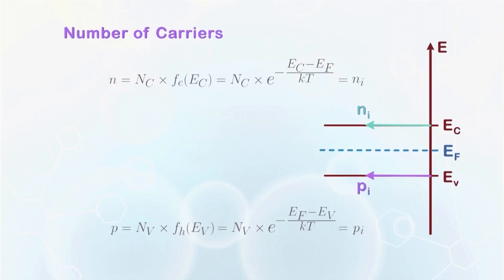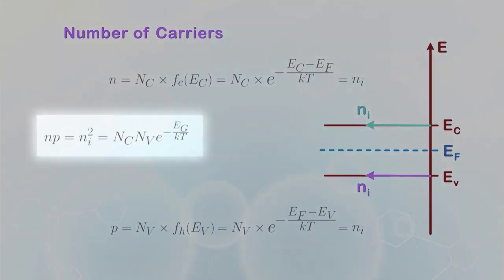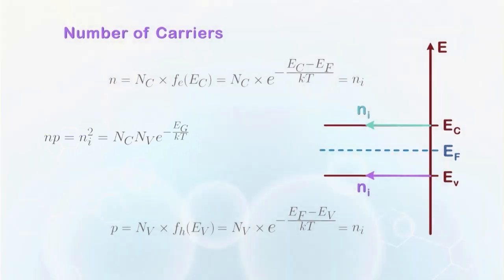We know that the number of holes equals the number of electrons in an intrinsic silicon, and we sometimes just label both of them by Ni, indicating the intrinsic carrier concentration. If we multiply them together, we obtain Ni squared equal to Nc times Nv times e to the power minus EG over kT. The final expression shows that the number of carriers increases with increasing temperature and decreases with increasing bandgap. This agrees with our understanding of the behavior of a semiconductor.